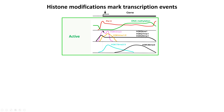Looking at histone modifications: promoters of active genes are highly enriched for H3 lysine 4 trimethylation, with lower signals of mono- and dimethylation of H3 lysine 4 (often byproducts of the trimethylation enzymes). Gene bodies tend to have modest levels of these monomethyl marks but also high levels of H3 lysine 79 di/trimethylation at the 5' end — closely associated with the promoter — and late into the gene body, enrichment of H3 lysine 36 trimethylation.